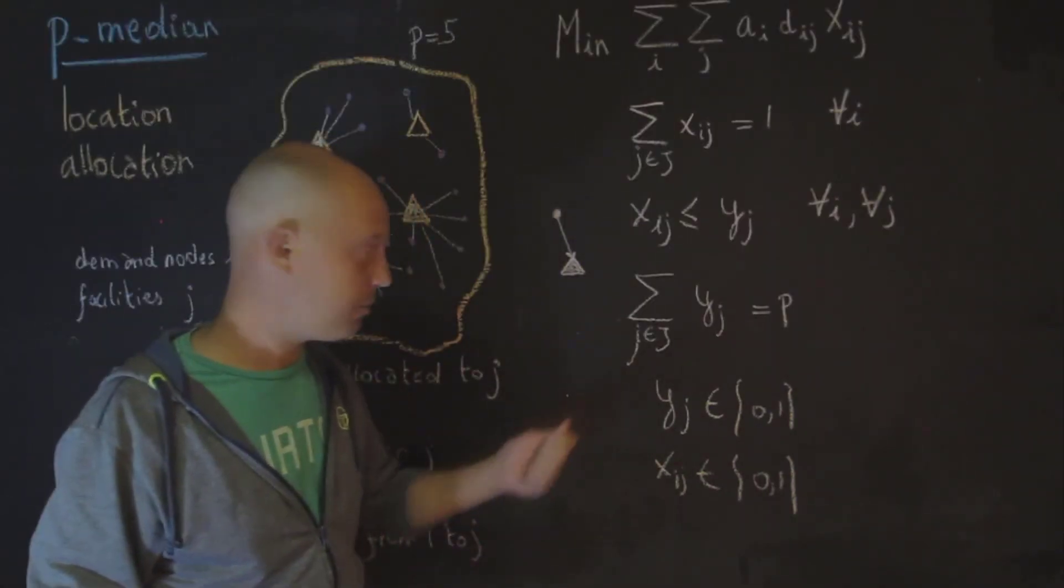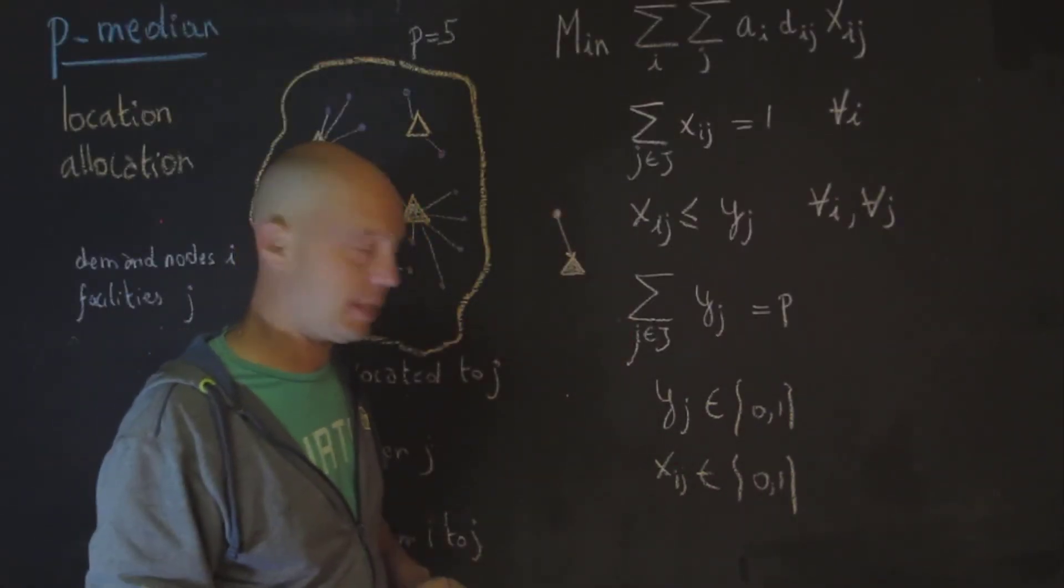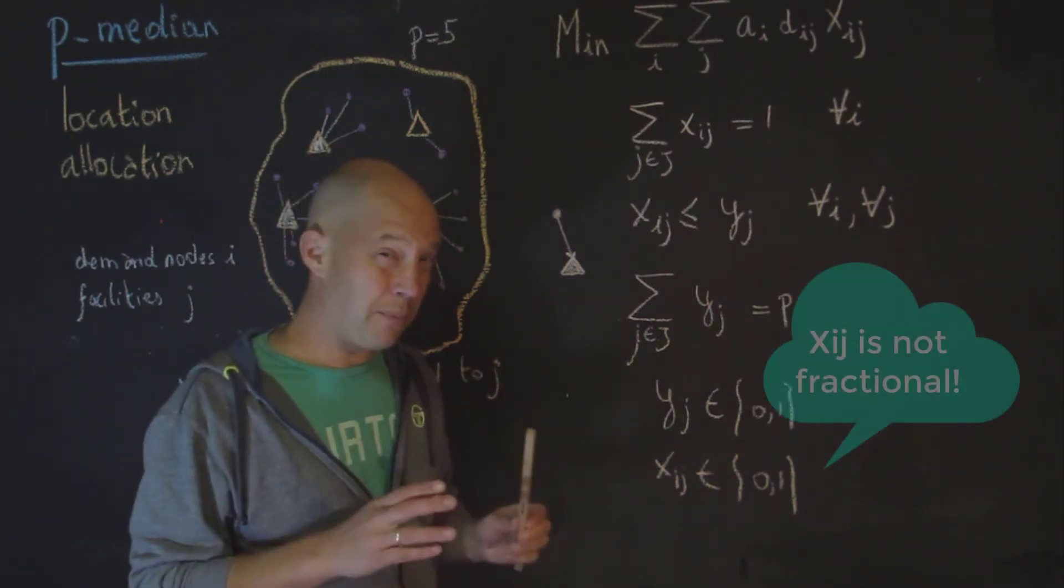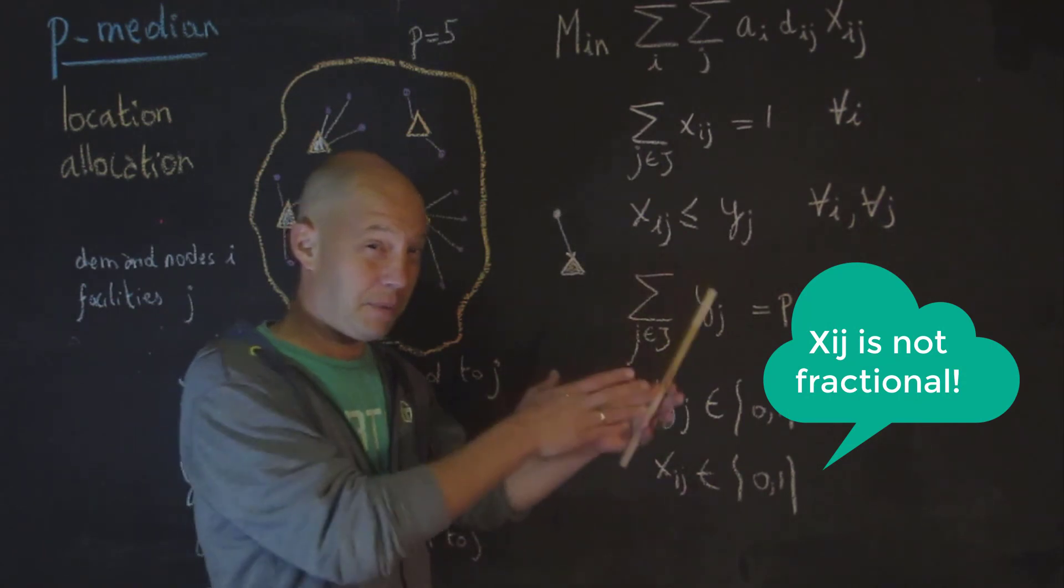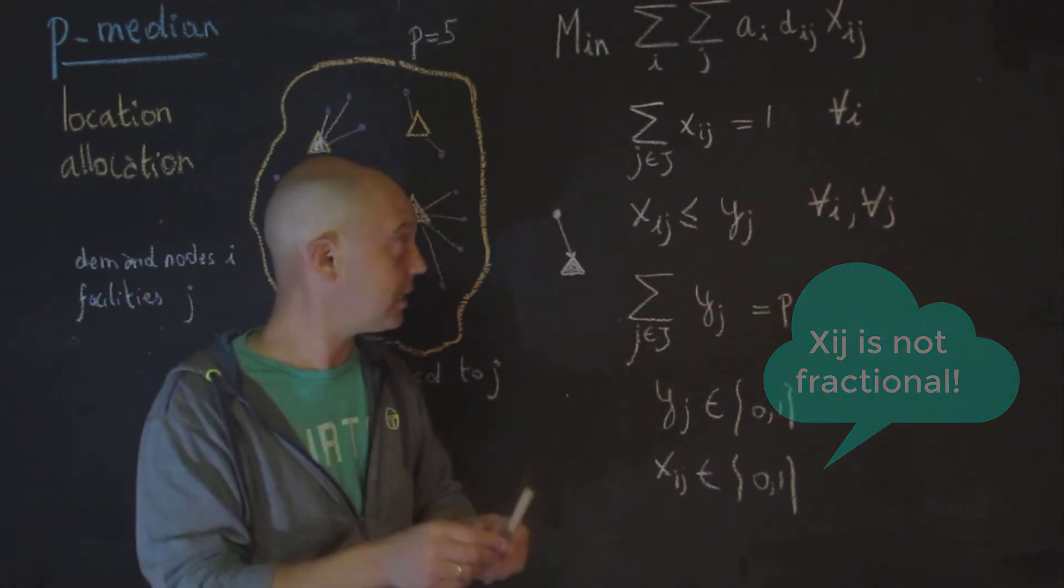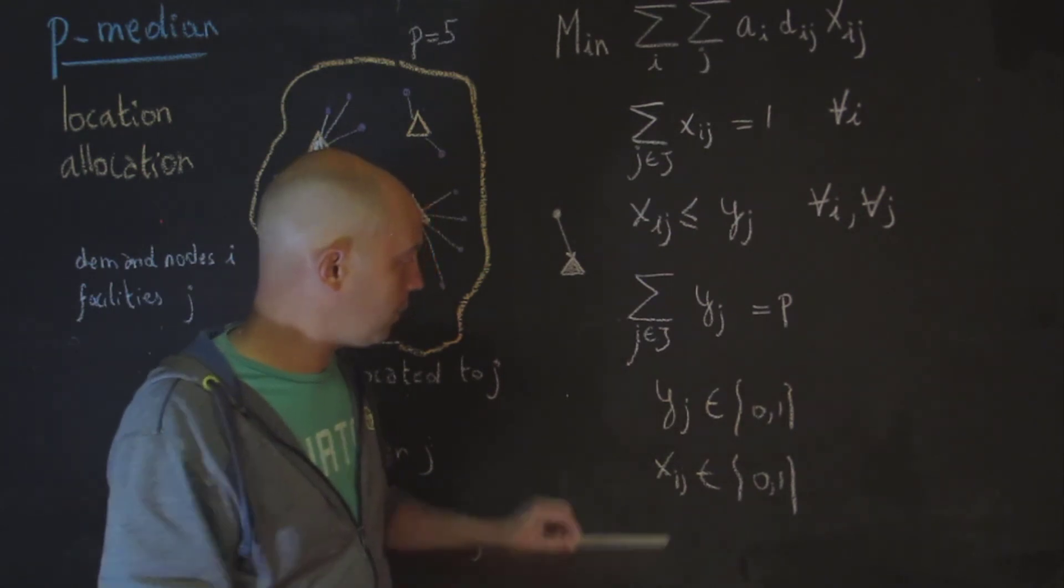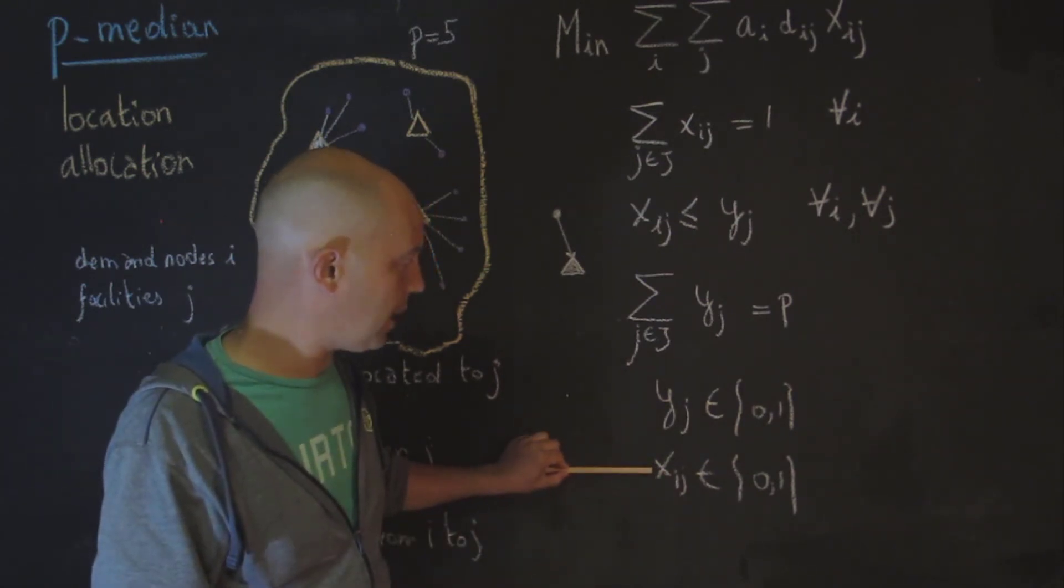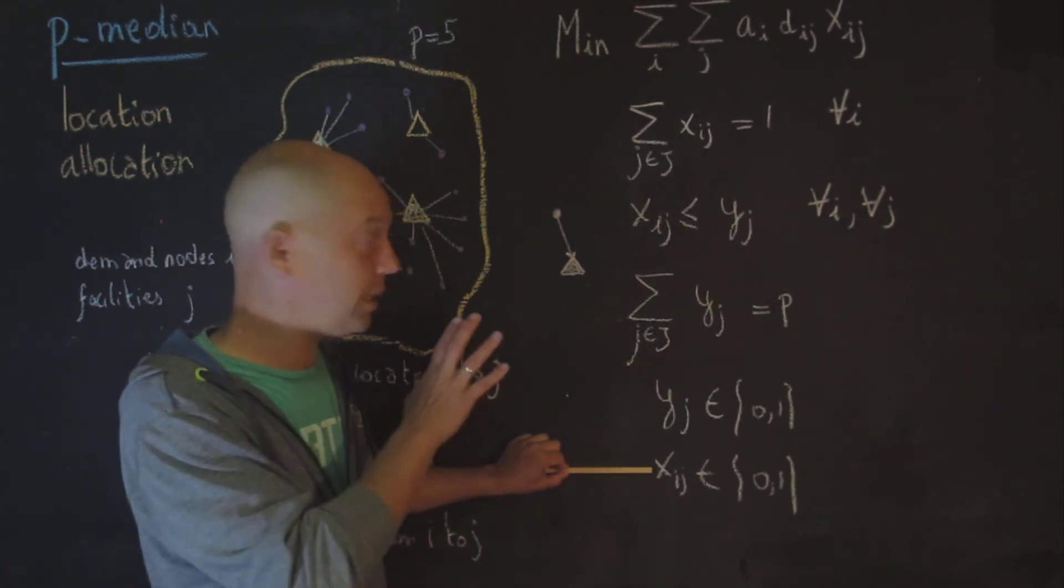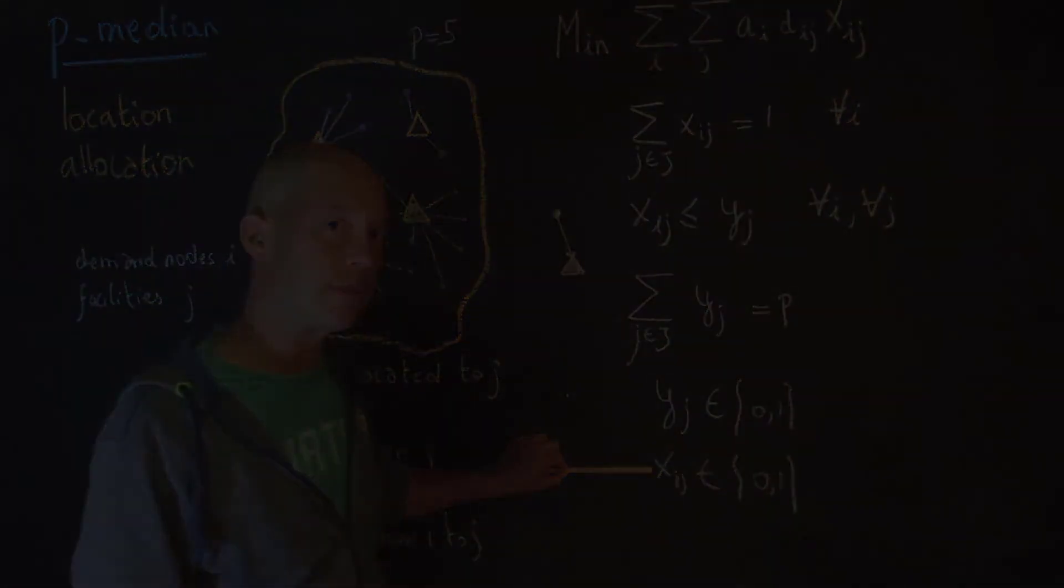A couple of things that I want to mention. We're not taking into account capacity problems in this one. We'll talk about this later. And then here, xij should be 0, 1. So this is quite important because a student cannot be sent 50% to a school and 50% to another school. At least that's an example. So this could become fractional in other examples, but certainly not in this one of school, for instance.